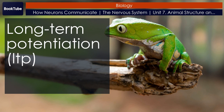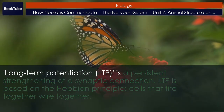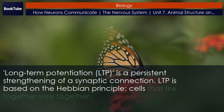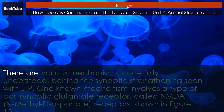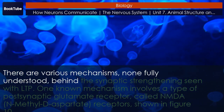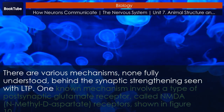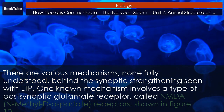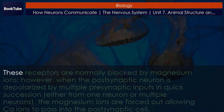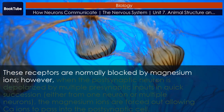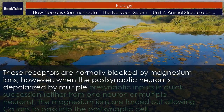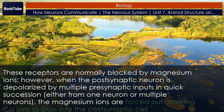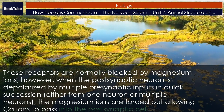Long-term potentiation (LTP) is a persistent strengthening of a synaptic connection. LTP is based on the Hebbian principle: cells that fire together wire together. There are various mechanisms, none fully understood, behind the synaptic strengthening seen with LTP. One known mechanism involves a type of postsynaptic glutamate receptor called NMDA (N-methyl-D-aspartate) receptors, shown in Figure 10. These receptors are normally blocked by magnesium ions. However, when the postsynaptic neuron is depolarized by multiple presynaptic inputs in quick succession — either from one neuron or multiple neurons — the magnesium ions are forced out, allowing Ca2+ ions to pass into the postsynaptic cell.